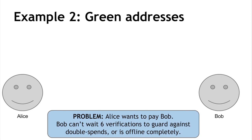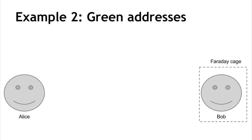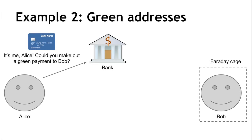Another cool application is green addresses. The problem is that Alice wants to pay Bob, but Bob is offline — he can't check the blockchain to see if Alice's transaction is there, or he doesn't have time to wait for confirmation. Normally we want a transaction confirmed by six blocks, which takes up to an hour. Or Bob might be in a Faraday cage with no internet at all — like a street food vendor. To solve this, we introduce a bank as a third party. Alice tells her bank she wants to pay Bob, and the bank deducts money from Alice's account and creates a transaction from one of its 'green addresses' to Bob.